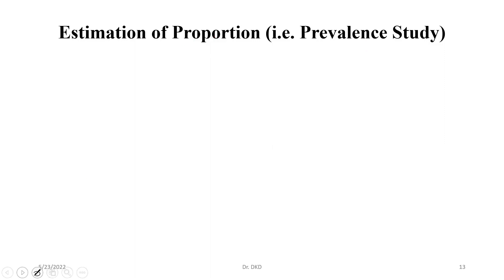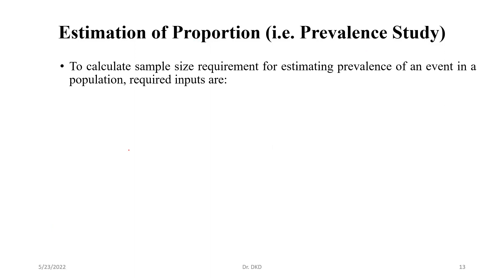If proportion or prevalence is given, then how we will calculate the minimum sample size. To calculate sample size requirement for estimating prevalence of an event in a population, required inputs are expected prevalence of the event in the study group.